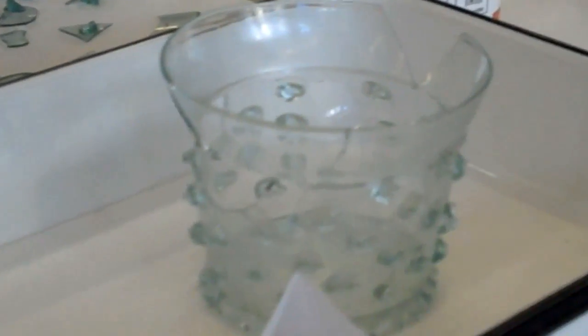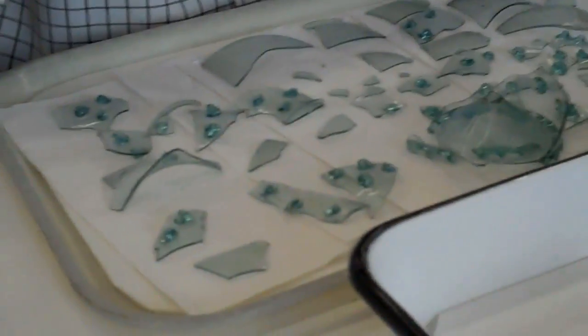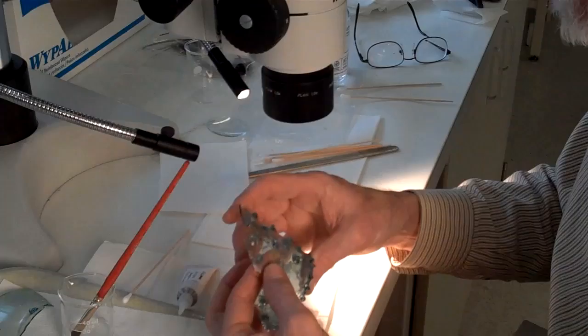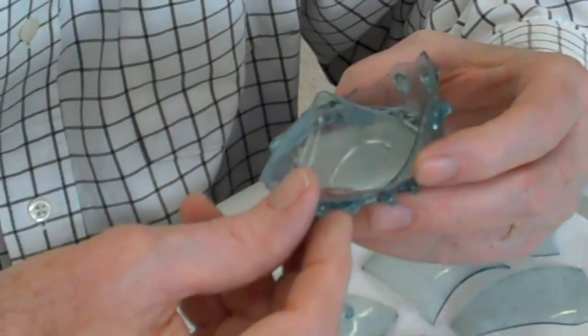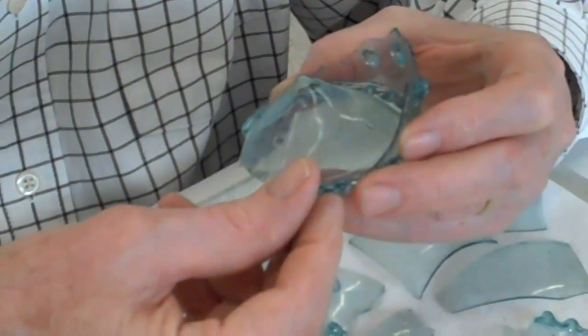The way we approach these things is to first make sure all the fragments are clean, and then you begin assembly from one major point, usually the base, which is what I usually work on. Then you find fragments that join to the base and carry on from there.